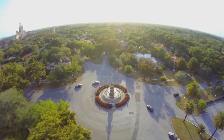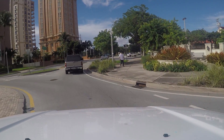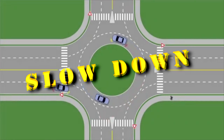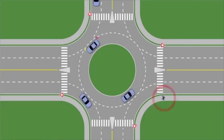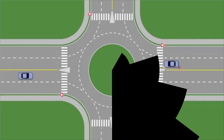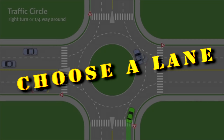To navigate a roundabout in Coral Gables, follow these simple steps. Slow down. Watch out for pedestrians and bicyclists in the crosswalk. If it has two lanes, choose a lane.